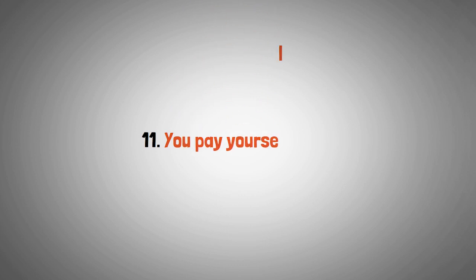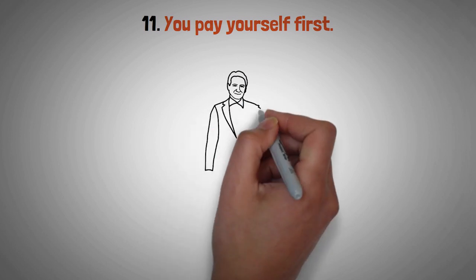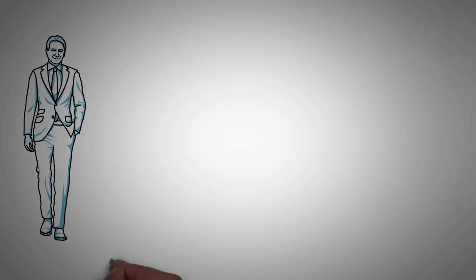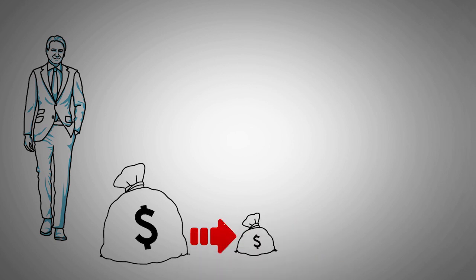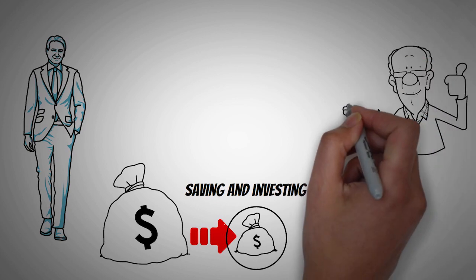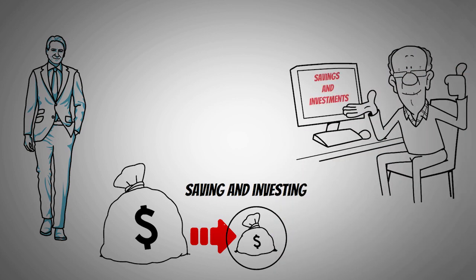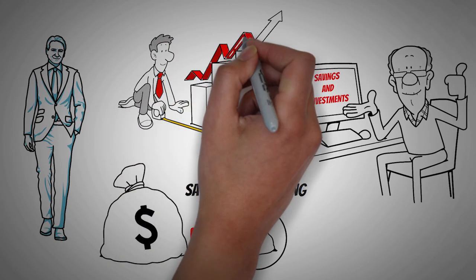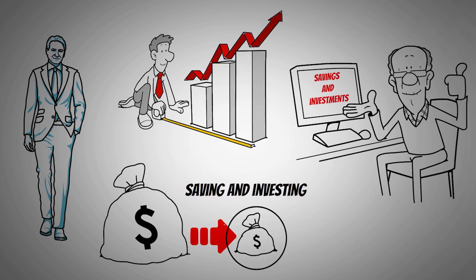Number 11: you pay yourself first. You are not a consumer, you are a producer. You have a clear and compelling habit to save and invest a portion of your income before spending on anything else. You treat saving and investing as an essential expense that comes before anything else. You automate your savings and investments to make them consistent and effortless. You also increase the amount you save and invest as your income grows. You don't just work for money, you make money work for you.